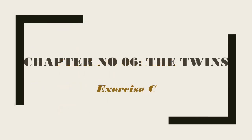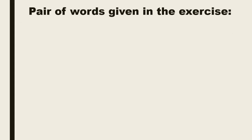First of all we shall do chapter number 6, The Twins, exercise C. This exercise is related to pair of words. Pair of words are the words that sound the same when pronounced but are spelled differently and have different meanings. Now a few pair of words are given in the exercise. We shall discuss them one by one.